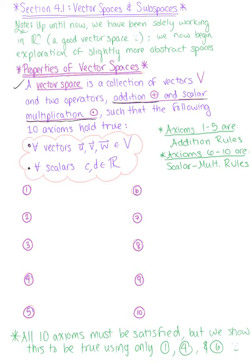The first axiom is that vector u plus vector v must be an element of the vector space. Number two, vector u plus vector v is equal to vector v plus vector u. Number three, if we take the sum of vector u and vector v and then add vector w, this should be equivalent to vector u plus the sum of vector v plus vector w.